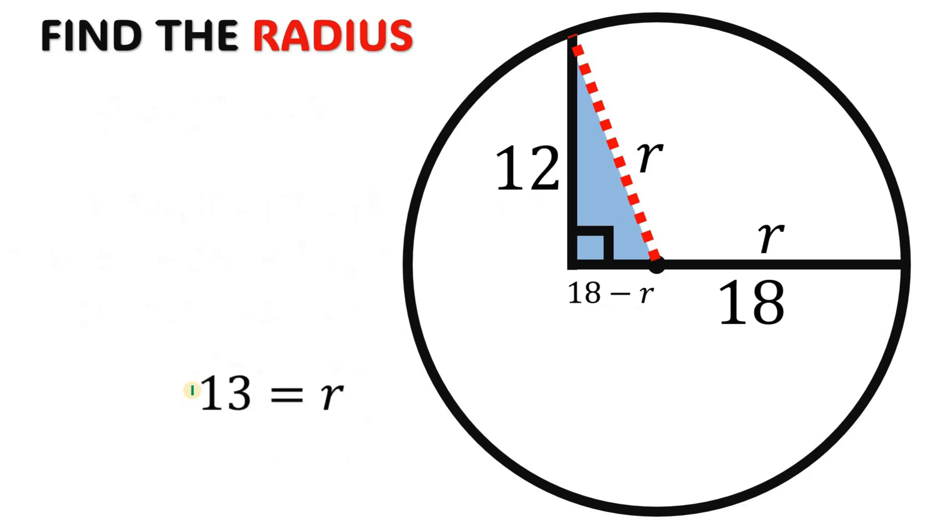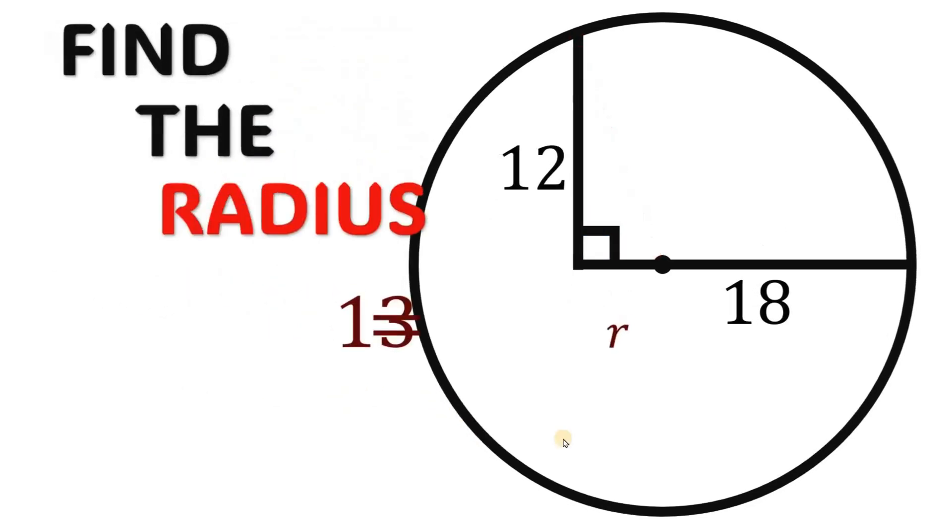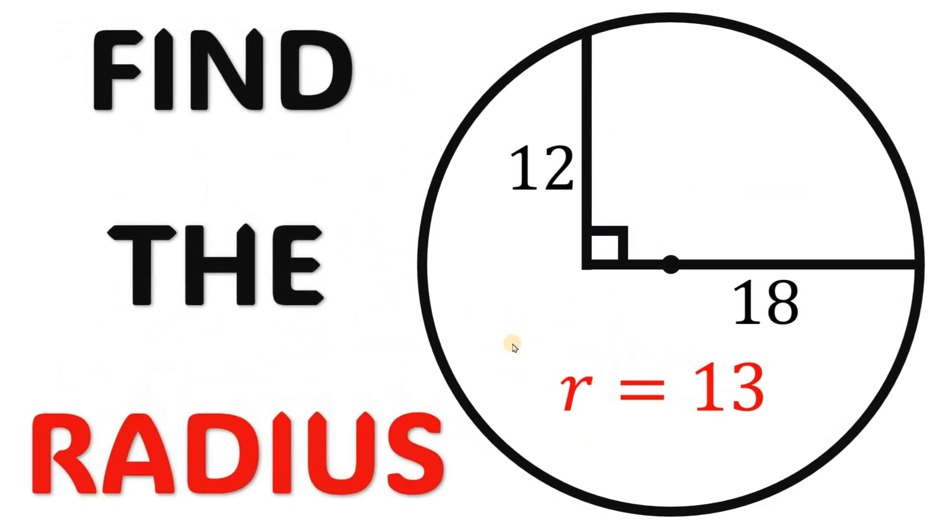Therefore, given this figure, the length of the radius of this circle simply equals 13 units. And as always, we are done.